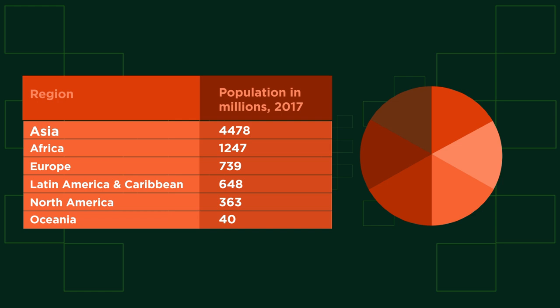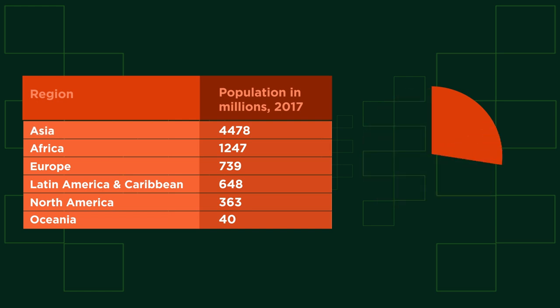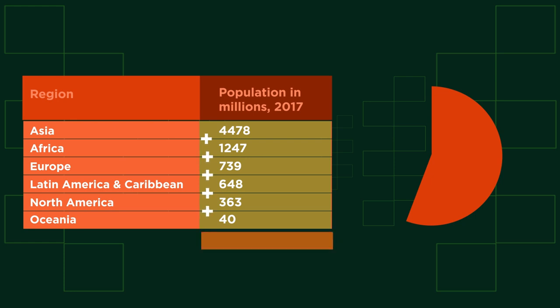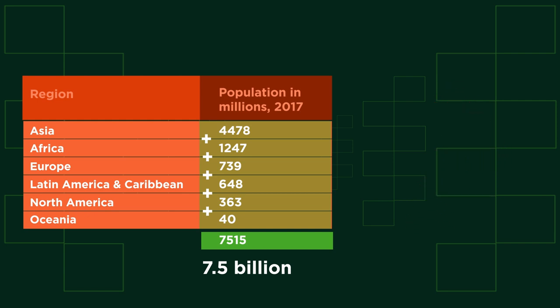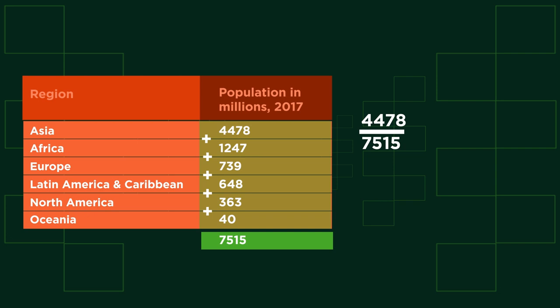Asia has the biggest population, so it needs the biggest slice. To work out exactly how big, we need to add up all of the values to work out the total population, which gives us 7515 million people in the world — which is actually 7.5 billion. The size of the Asia slice is 4478 out of 7515 as a proportion of the full 360 degrees.